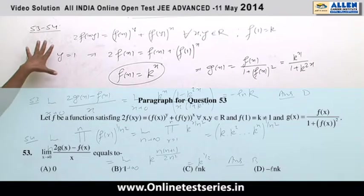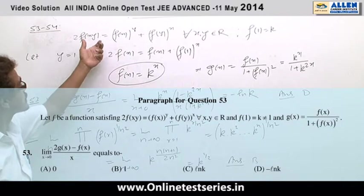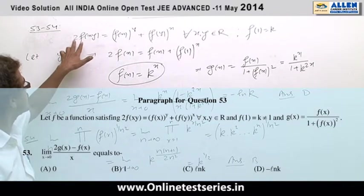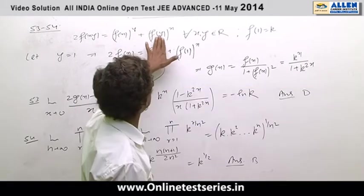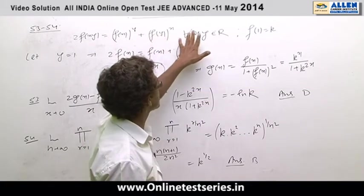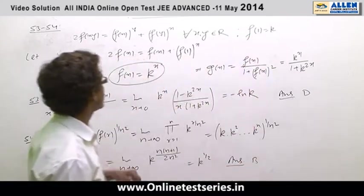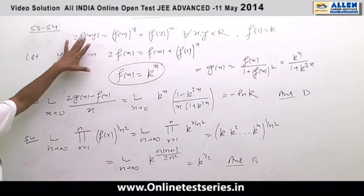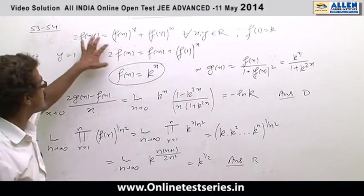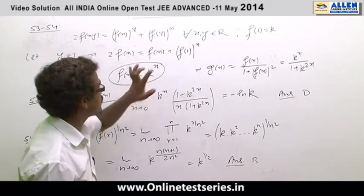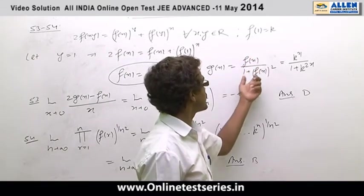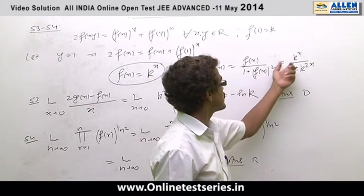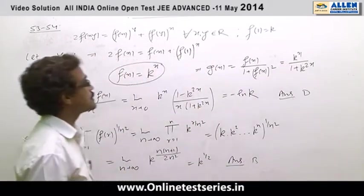Now the third paragraph for question number 53 and 54. There is a functional relation for function f(x) given. Twice of f(xy) equals f(x) raised to power y plus f(y) raised to power x, and given that f(1) equals k. Replace the value of y equals 1 in this functional relation will give you f(x) equals k to the power x.